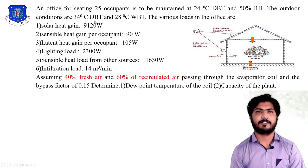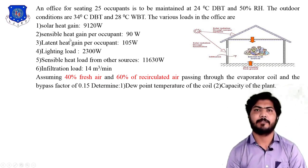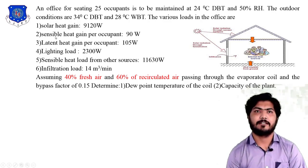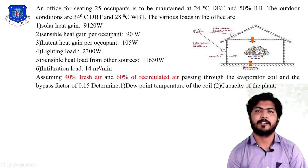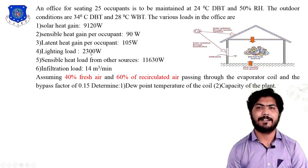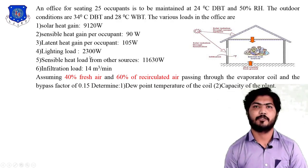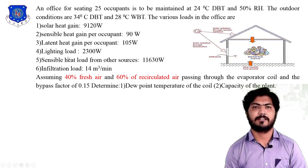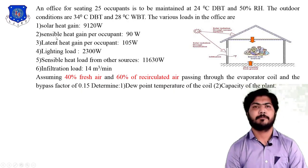The various heat loads in the office are given as follows: solar heat gain from the sun is 9120 W, sensible heat gain per occupant is 90 W, latent heat gain per occupant is 105 W, lighting load is 2300 W, sensible heat gain is 11630 W, and infiltration load is 14 cubic meters per minute.